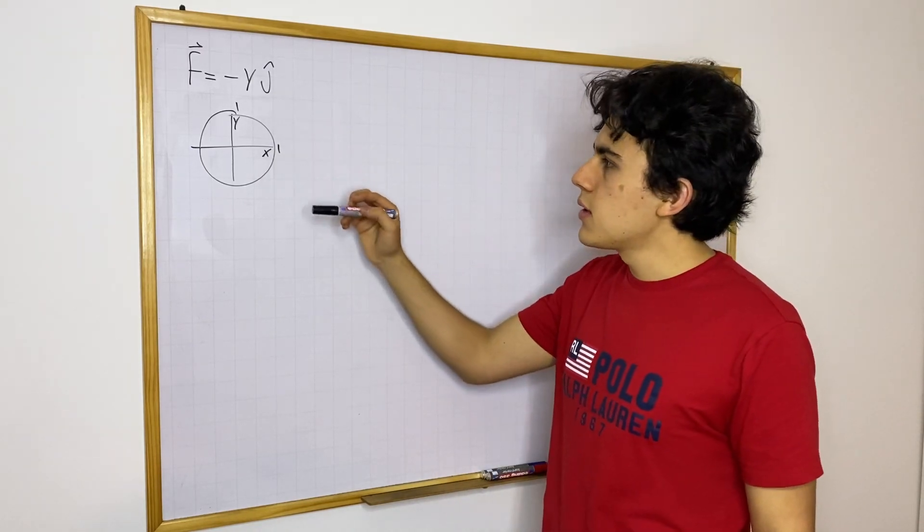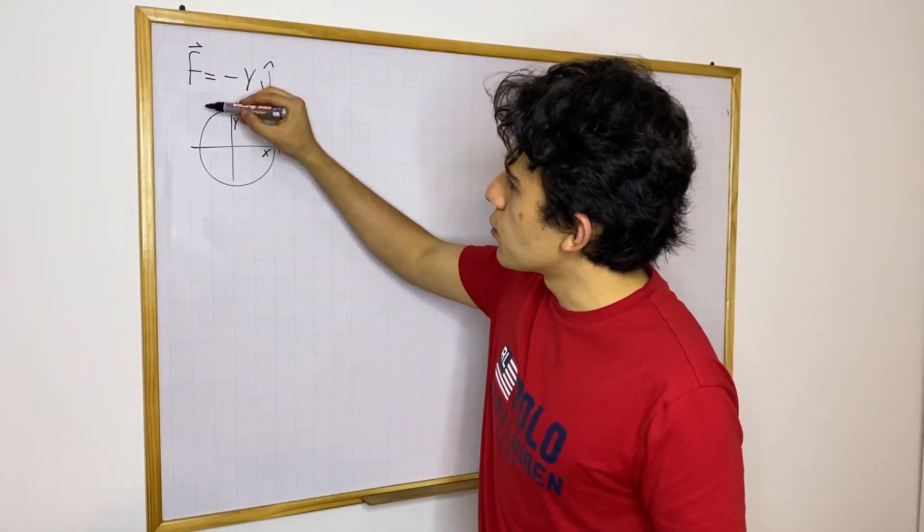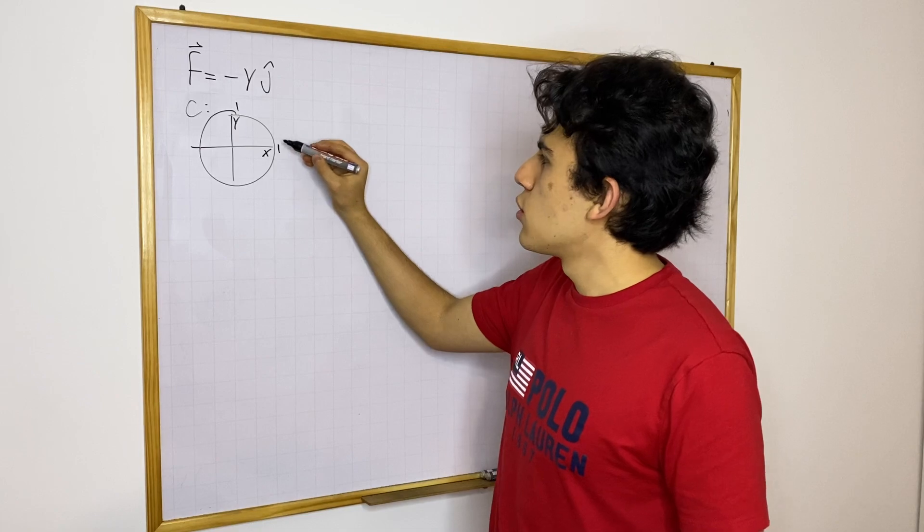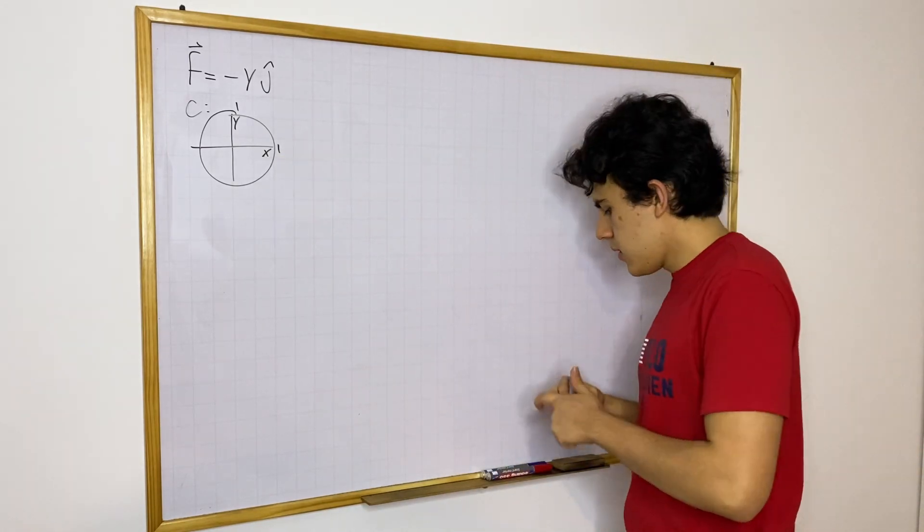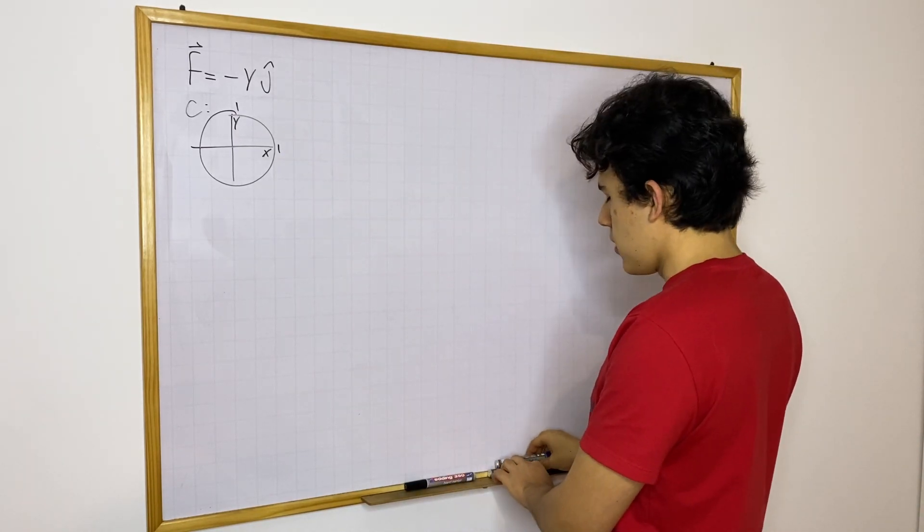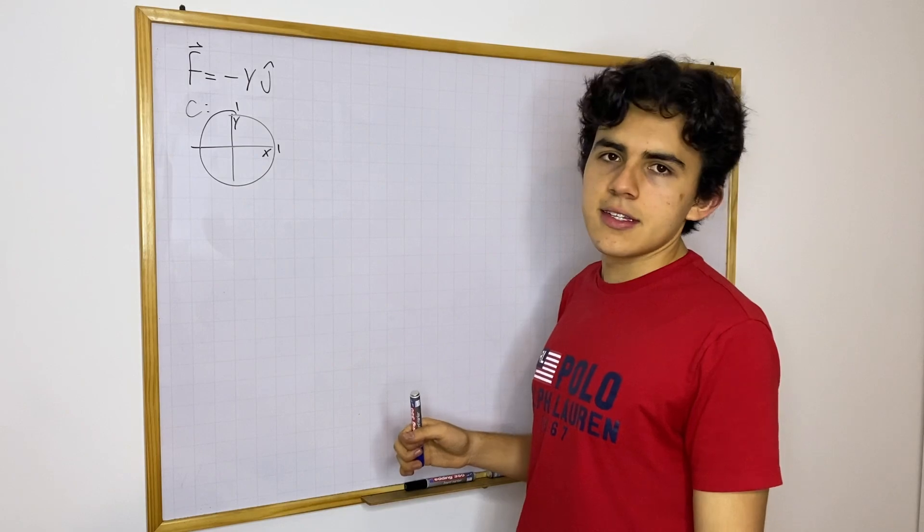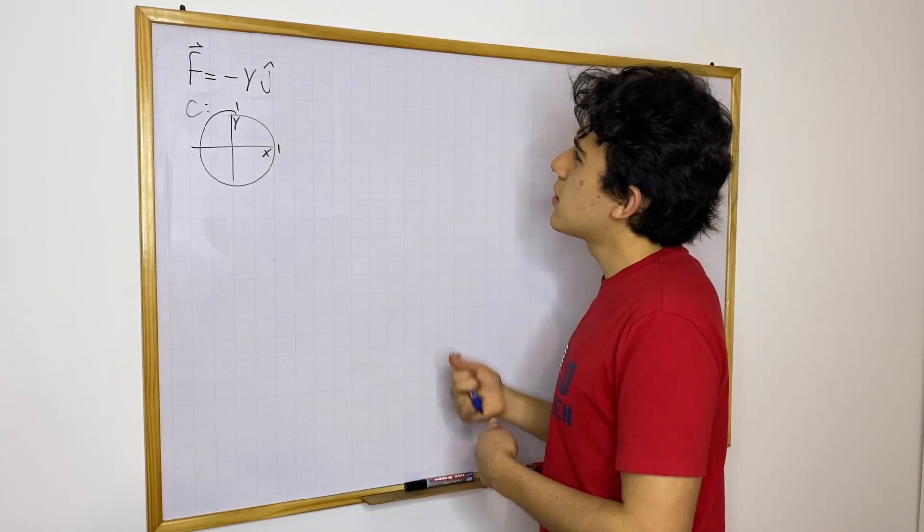So basically we have this vector field and the curve that we are interested in is going to be the unit circle. Okay, so let's do it. I'm going to do it in blue because my black is dying. So let's do it.